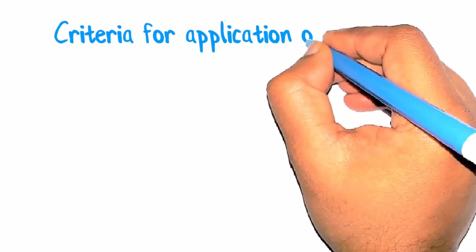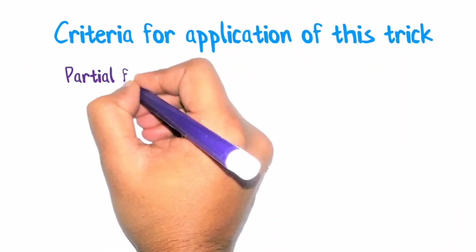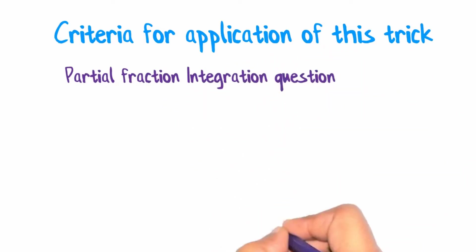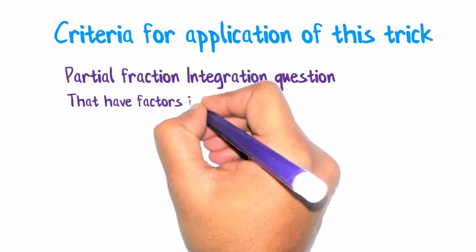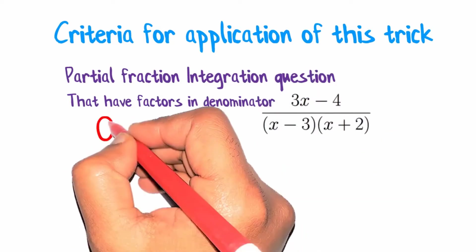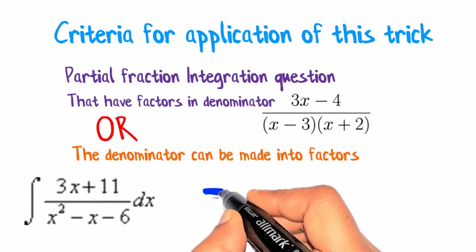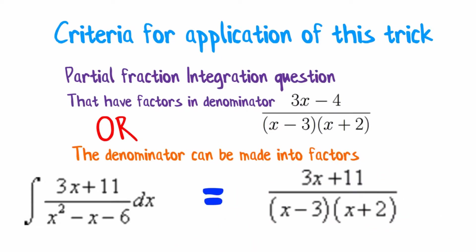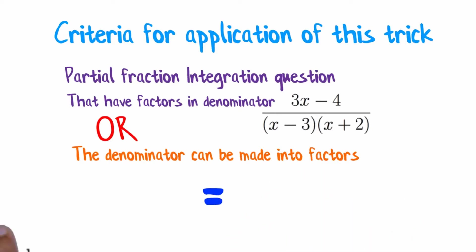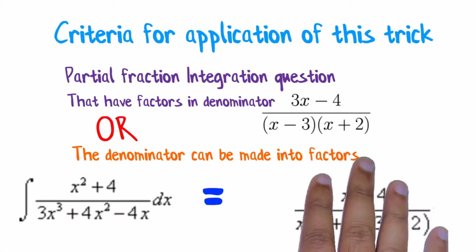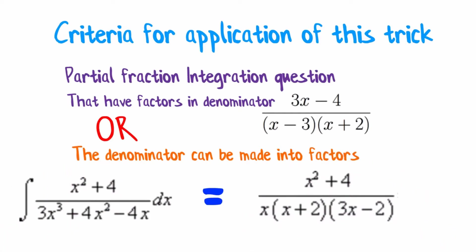So criteria for application of this trick is it must be a partial fraction integration question that have factors in the denominator. This question has factors in the denominator of x minus 3 and x plus 2. Or the denominator can be made into factors like this question is made into factors of x minus 3 and x plus 2. Or the denominator of this question is made into factors of x plus 2 and 3x minus 2.